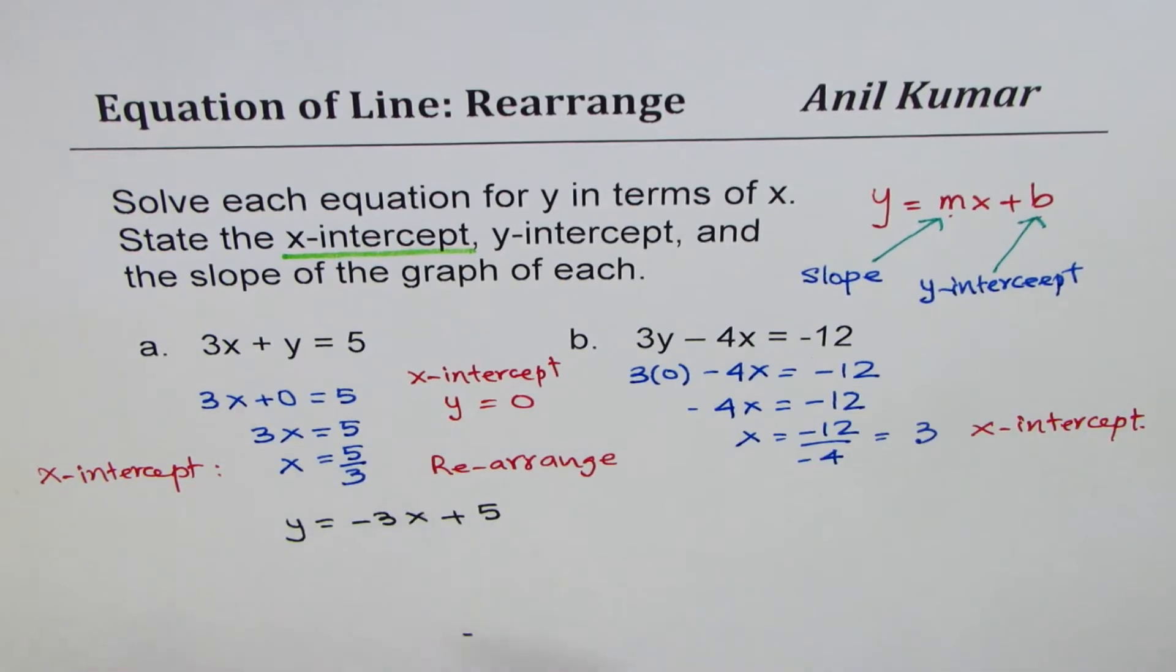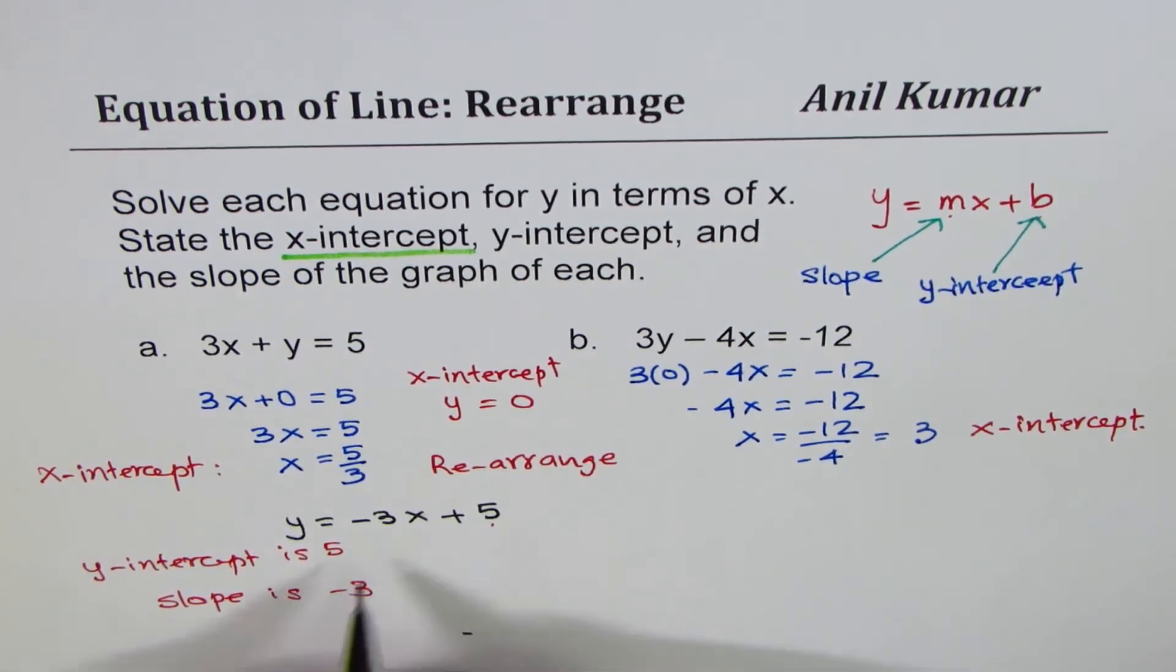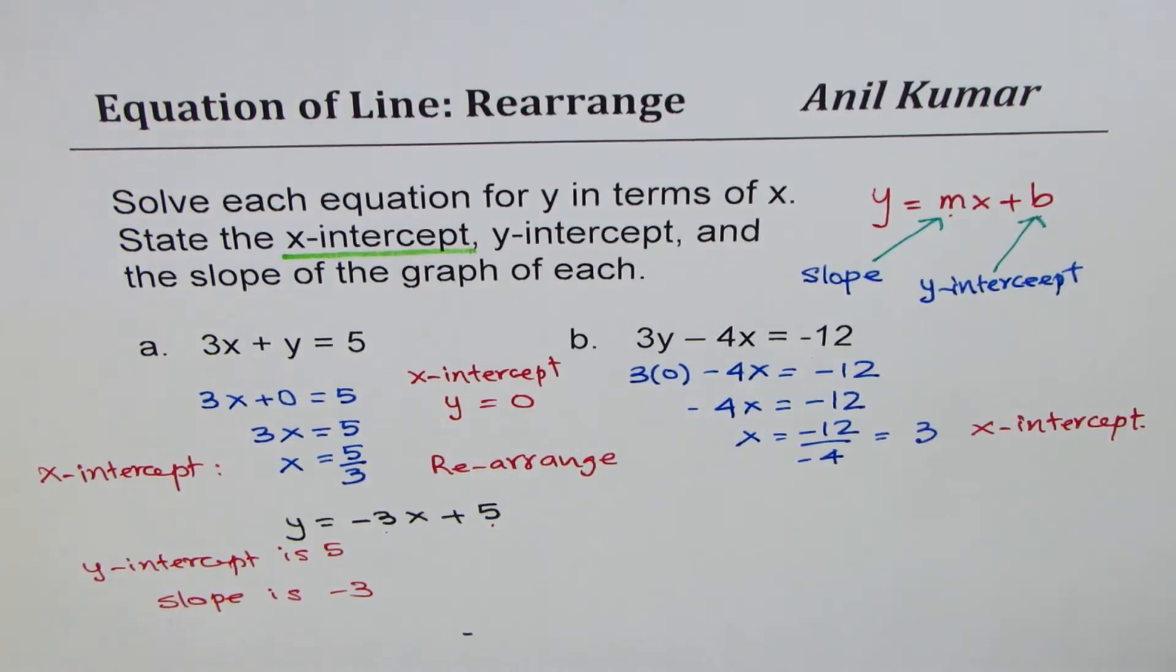You can say what is the y-intercept? So we have y-intercept is 5 and slope is minus 3. Do you see that minus 3 is the slope?